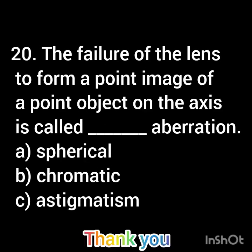The failure of the lens to form a point image of a point object on the axis is called dash aberration. Option A: spherical. Option B: chromatic. Option C: astigmatism. Thank you.